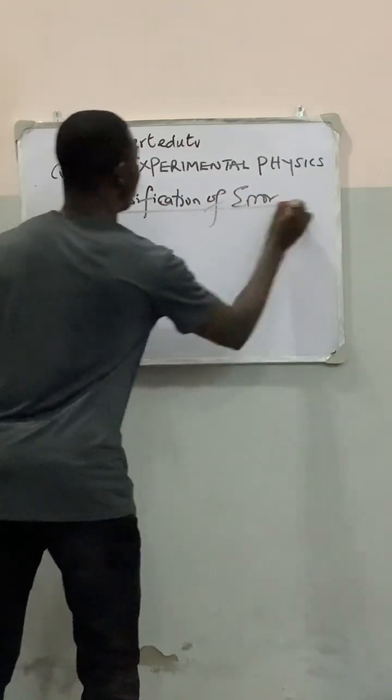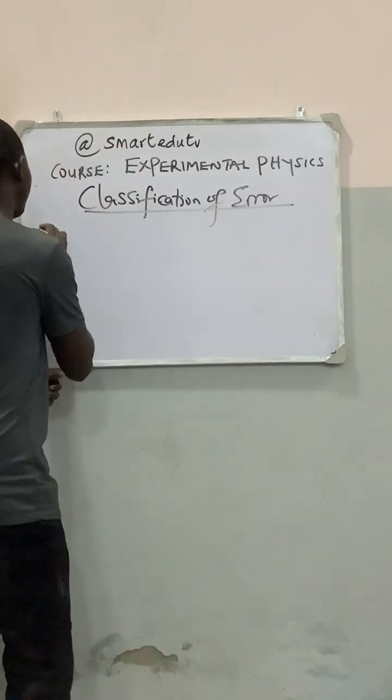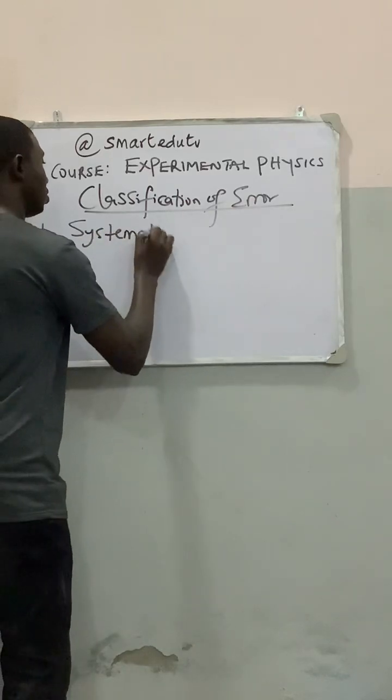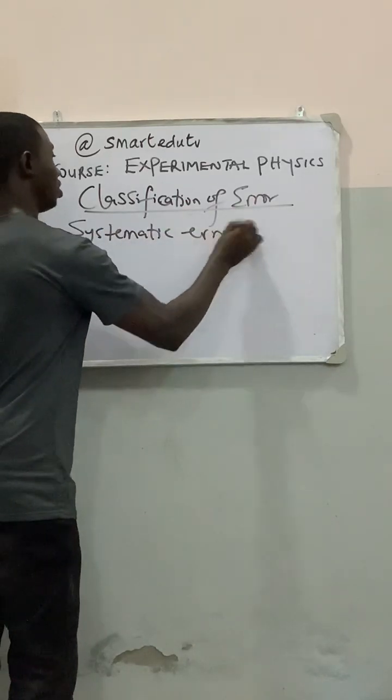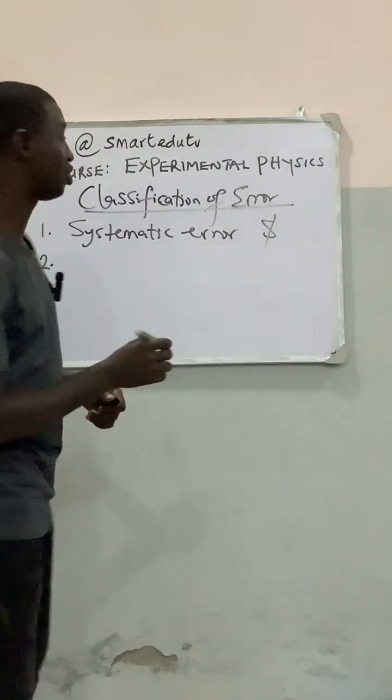Generally, there are two major classifications of errors. We can classify errors into two. The first one being systematic error, and the second one being random error.